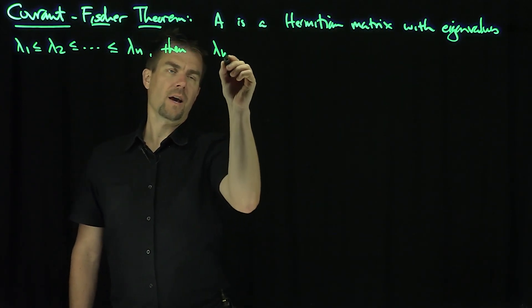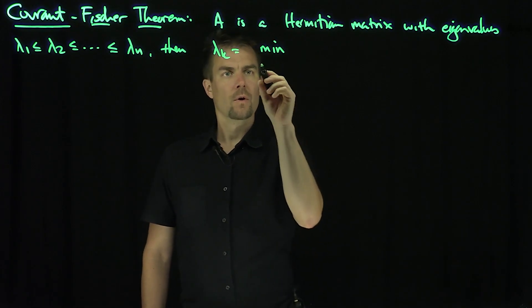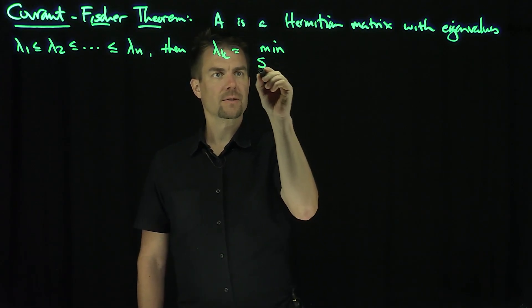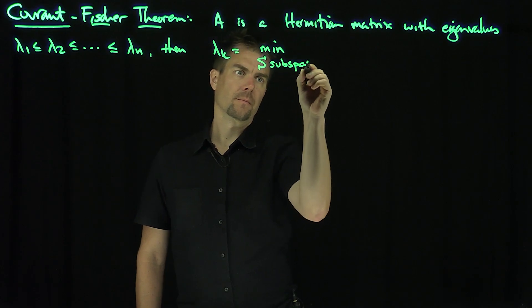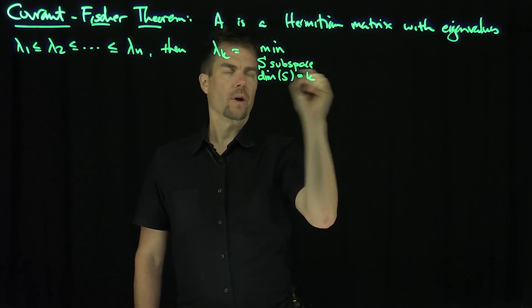then λₖ, for example, is the minimum over all subspaces S, a subspace with dimension of S equal to k, the maximum over all vectors x